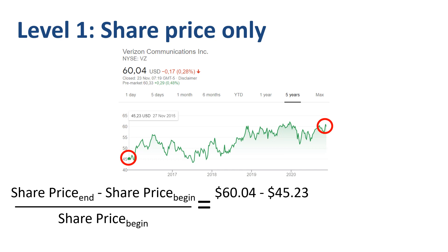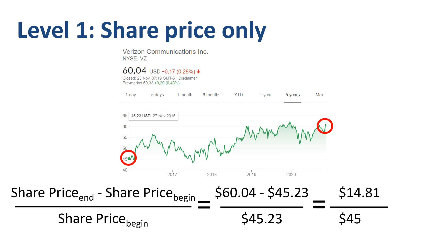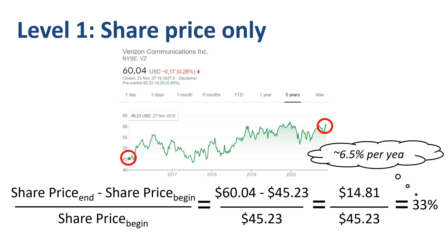$60.04 minus $45.23 divided by $45.23. This equates to $14.81 divided by $45.23, which is a 33% share price gain in five years. Translating that to annual returns by dividing 33% by 5, you get around 6.5% return per year. This works okay and is the final answer for stocks that do not pay a dividend.